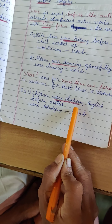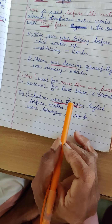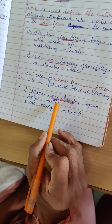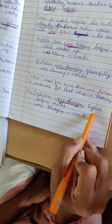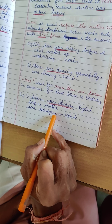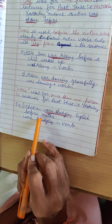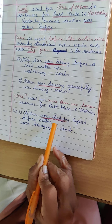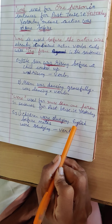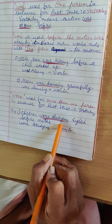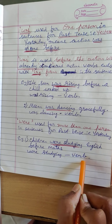Children were studying English before maths. What were the children doing here? Studying. Studying English before maths. Maths ke pehle unhone English study kar liya hai. Children were studying English before maths — maths ke period se pehle English period ho gaya hai. So 'were studying' is a verb.